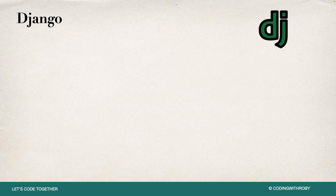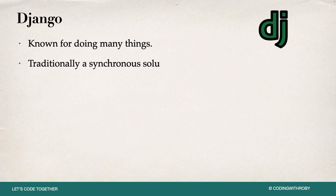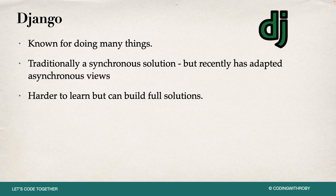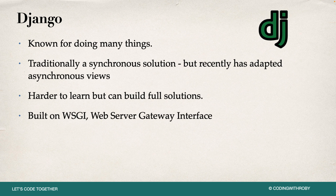You'll often see FastAPI used with Jinja on the front end, but most of the time it's paired with a small SPA application like React that communicates via API endpoints. Django, on the other hand, is traditionally a synchronous solution but has recently adopted asynchronous views. Overall, Django is harder to learn but can be built as a full solution — many startups use Django to build their entire application. Instead of ASGI, Django is built on top of WSGI — the Web Server Gateway Interface — and was created in 2005, thirteen years before FastAPI.